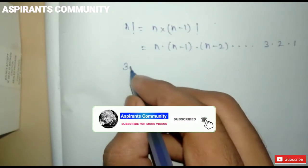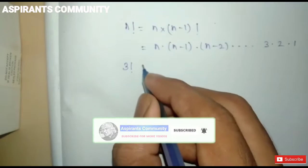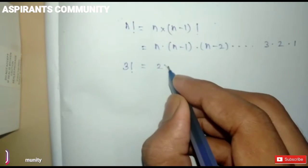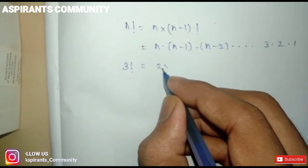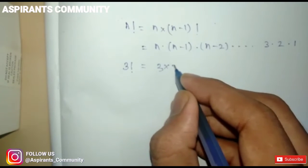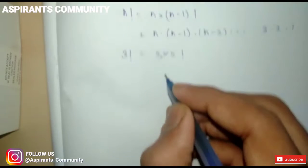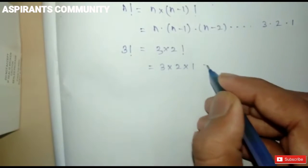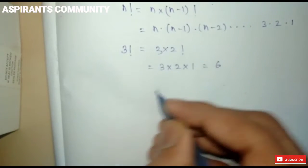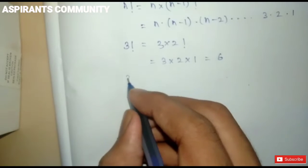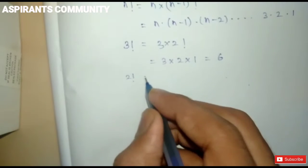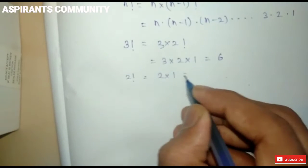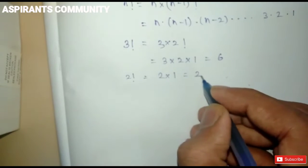So, 3 factorial equals 3 into 2 factorial, that is 3 into 2 into 1, so we get 6. And 2 factorial equals 2 into 1, which equals 2.